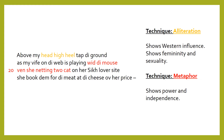The alliteration with the H sound shows the western influence on the couple and it shows the bride's femininity and sexuality. The cat and mouse metaphor shows power and independence.